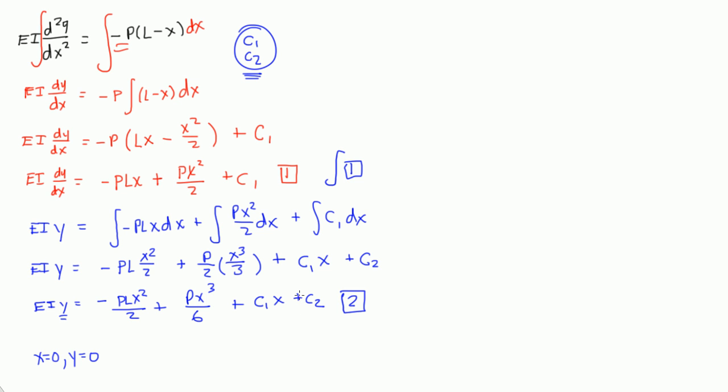So, if I did that, if I plugged in x equals 0, y equals 0 into equation 2, I'm going to get EI times 0 is equal to negative PL0 squared over 2 plus P times 0 to the third over 6 plus C1 times 0 plus C2. So, all of these terms are 0, the left side is 0.